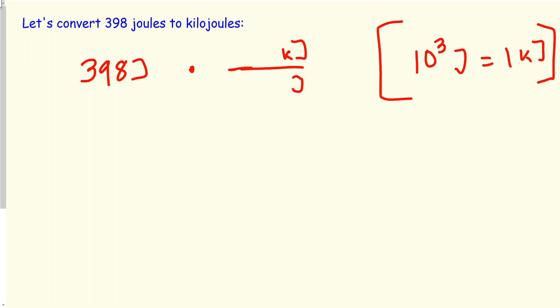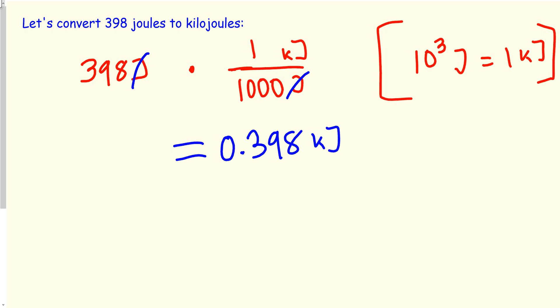Let's try one more. We need to convert 398 joules to kilojoules. Based on reference table C, kilo is bigger because the exponent is positive. So 1,000 joules equals 1 kilojoule. You cancel out joules, do the math, and the answer is 0.398 kilojoules. If you got a different number, double check your work.